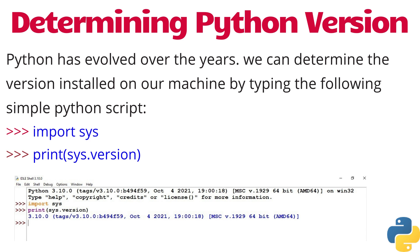Whenever you type this print command with sys.version and press Enter, the following output is displayed. After typing import sys and then print(sys.version), the output shows 3.10.0 — this is the version installed on your machine. That's all about our current lecture. We demonstrated how to install Python in Windows and Linux/Unix/Ubuntu, how to run the first Python program using two methods, and how to determine the Python version. From the next lecture onwards we will start discussing the basics of Python programming.